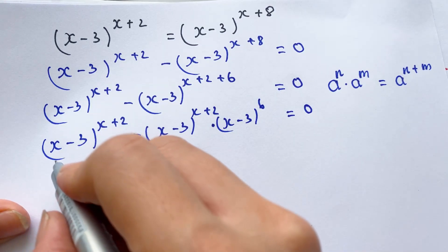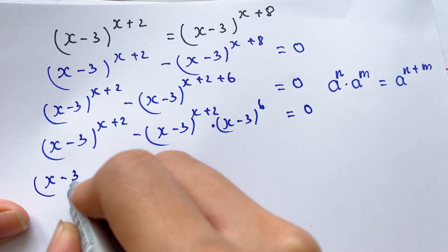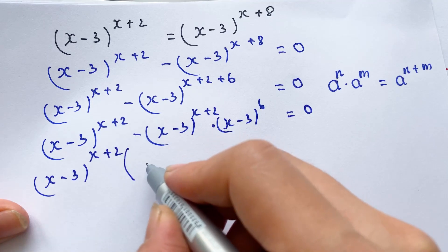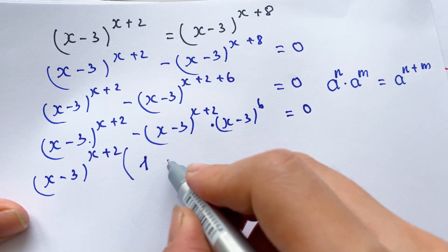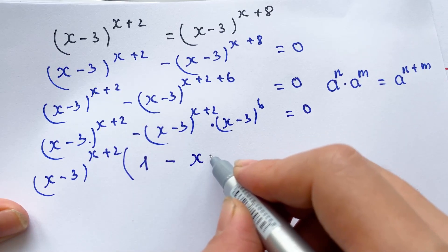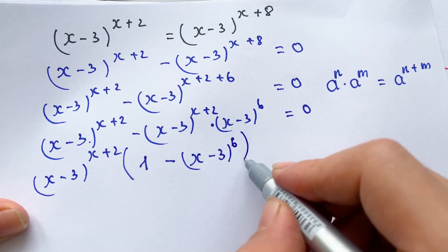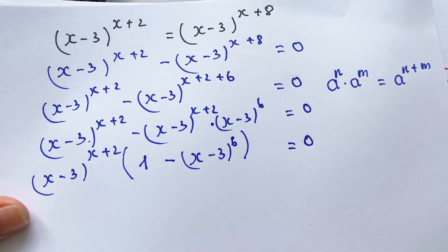And so, we can take it out. (x-3)^(x+2) times 1, we have this one, minus (x-3)^6 whole bracket equals 0.